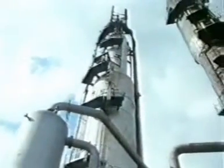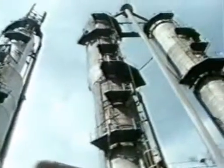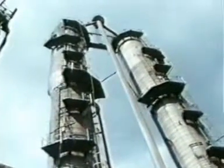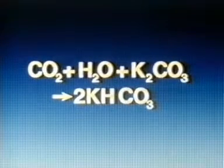Carbon dioxide can quite easily be removed in the next stage. This is where it happens — in these tall towers. The gases pass through a concentrated solution of potassium carbonate. The carbon dioxide reacts with the water and the K2CO3 to produce potassium hydrogen carbonate, KHCO3, and the other gases pass on. In another vessel, the potassium hydrogen carbonate solution is heated, causing decomposition so the carbon dioxide is released and can be used elsewhere or sold, while the potassium carbonate solution can be reused.